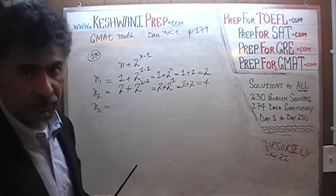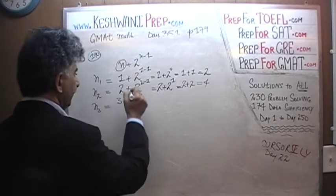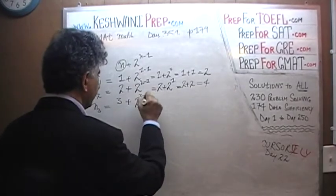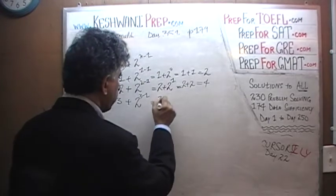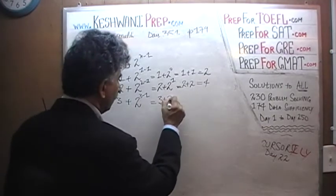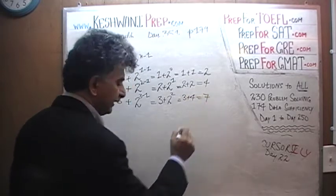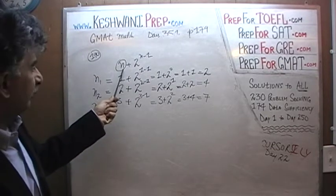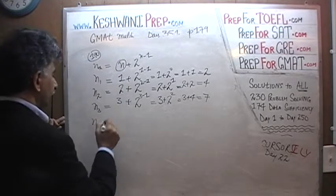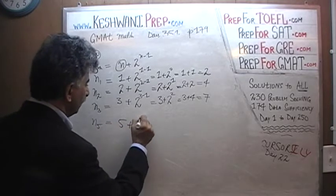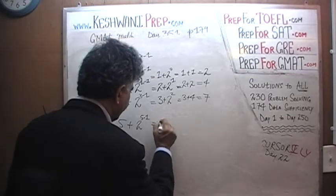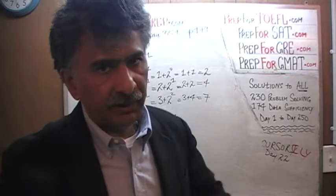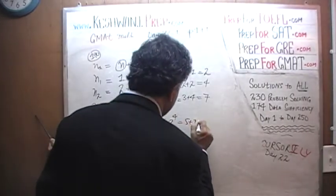Similarly, the third term in the series is going to be 3 plus 2 raised to 3 minus 1, which gives us 2 raised to 2, so 3 plus 4, which is 7. We can go on like this. For example, the fifth term is going to be — wherever we see n, we replace it with 5 — so 5 plus 2 raised to 5 minus 1, which gives us 5 plus 2 raised to 4. Since 2 cubed is 8, 8 times 2 is 16, so it's 5 plus 16, giving us 21.